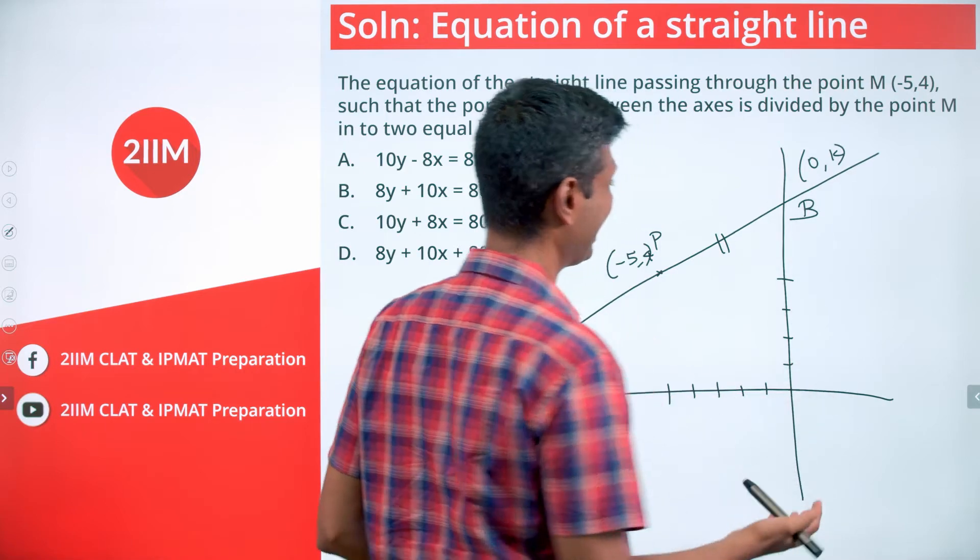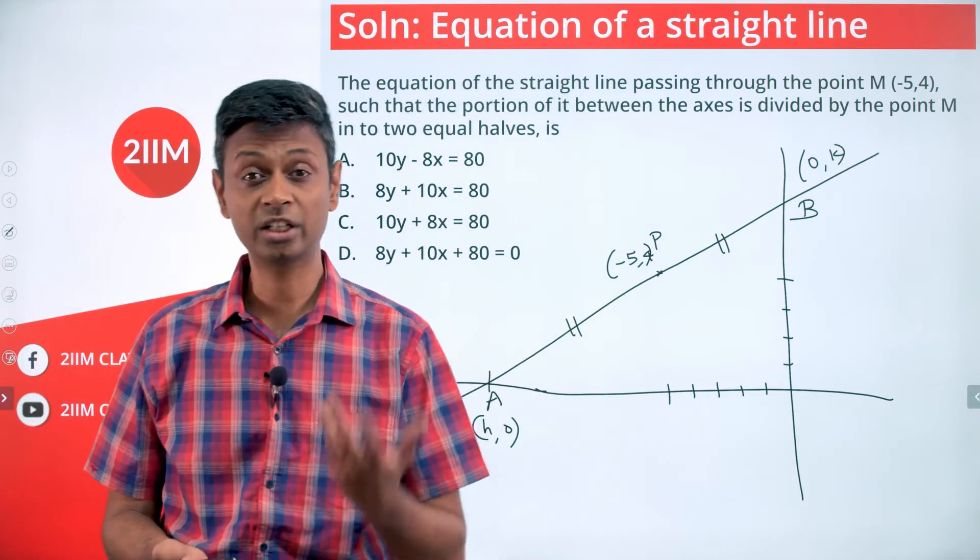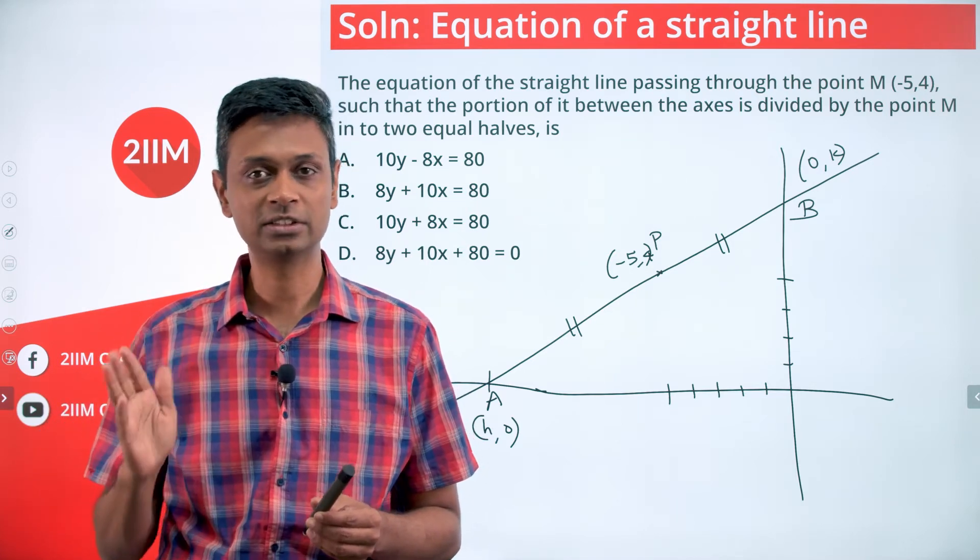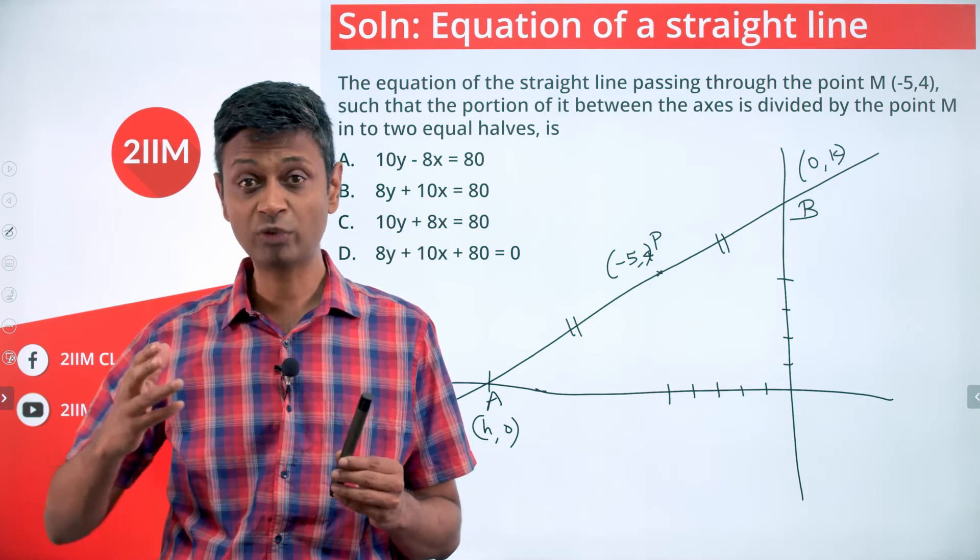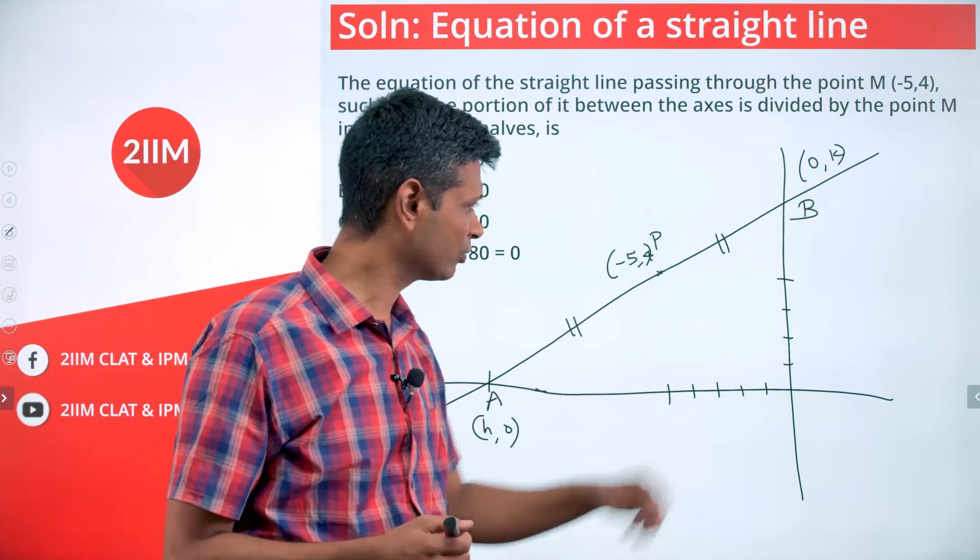This point is (-5, 4). Point here should be (h, 0) on the x-axis. Point here should be (0, k) on the y-axis. Anytime you're getting questions with coordinate geometry where there's a line cutting the x-axis, circle cutting the y-axis, any point on the x-axis is (h, 0), any point on the y-axis is (0, k).